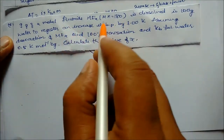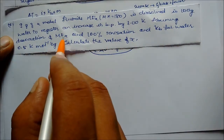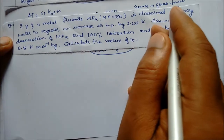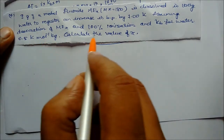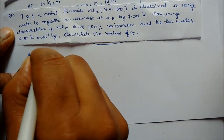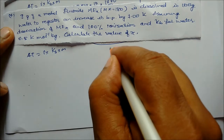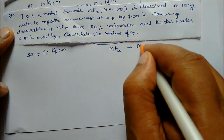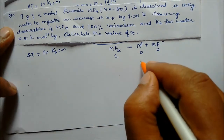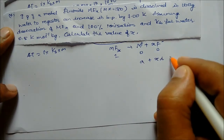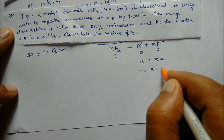Next problem: 7 grams of metal fluoride MXF is dissolved in 100 grams of water, causing a boiling point increase of 0.51 K. Assuming 100% ionization and Kb for water = 0.5 K·mol⁻¹·kg⁻¹, calculate the value of x. Using delta T = i × Kb × m. For MXF: M⁺ + XF⁻, ionization gives i = 1 + x.